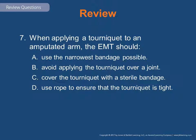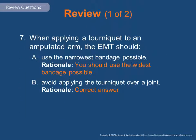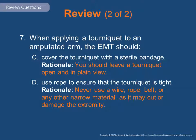Review question 7: When applying a tourniquet to an amputated arm, the EMT should use the narrowest bandage possible, avoid applying the tourniquet over a joint, cover the tourniquet with a sterile bandage, or use rope to ensure it is tight? The answer is B — avoid applying the tourniquet directly over a joint. Use the widest bandage possible and make sure it is secured tightly. Never use wire, rope, a belt, or any other narrow material as it could cut the skin. Never cover the tourniquet with a bandage — leave it open and in full view at all times.